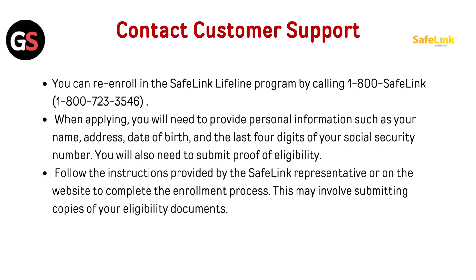When applying, you will need to provide personal information such as your name, address, date of birth, and the last four digits of your Social Security number. You will also need to submit proof of eligibility. Follow the instructions provided by the SafeLink representative or on the website to complete the enrollment process, which may involve submitting copies of your eligibility documents.